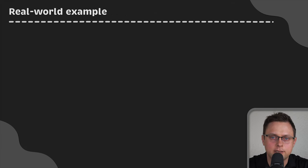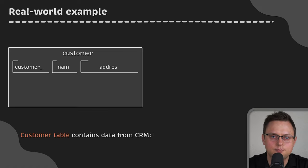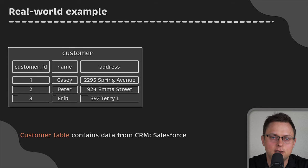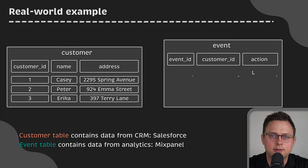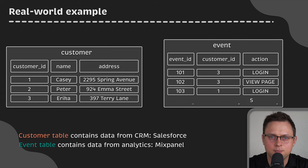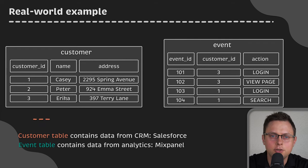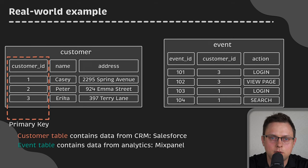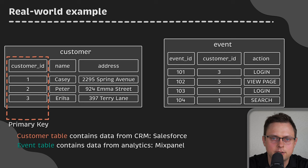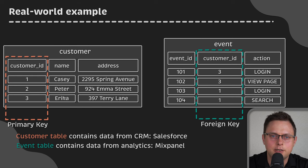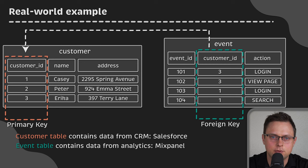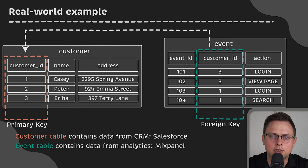Let's go over a real-world example. Let's say you have a customer table — it could contain data from a CRM tool like Salesforce, which includes users who are paid customers. And you may have another event table with data from an analytics tool like Mixpanel that tracks all the users' actions. Notice that there is a common column, customer ID, between the two tables. In the customer table, the customer ID column is the primary key. In the event table, the customer ID column is the foreign key, since that column refers to the customer ID column in the customer table. We can use this relationship to join the two tables together to get the customer and events data in one table.